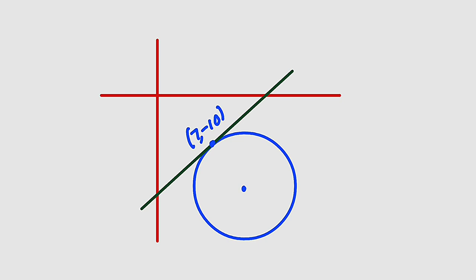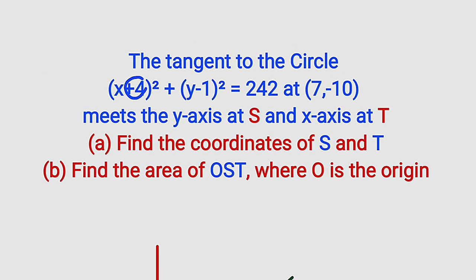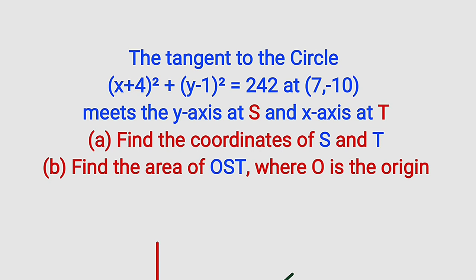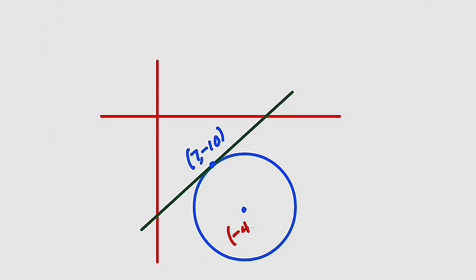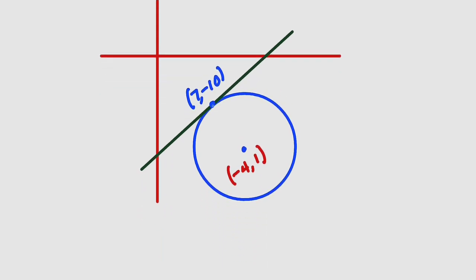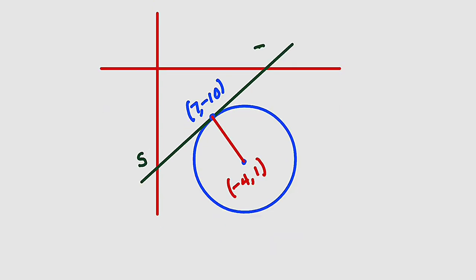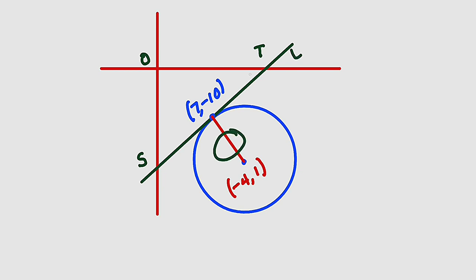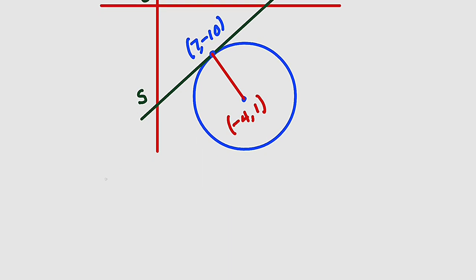The center of this circle will be negative 4 and positive 1. Remember you set the expressions equal to zero and solve for x and y, therefore the center of this circle is at (−4, 1). Now let us draw a radius — this is the radius of this circle. We have point S on the y-axis and point T on the x-axis and the origin O. To find these two coordinates, we first need to find the equation of the tangent line, which I'll call line L. The relationship between the radius and tangent line is that their respective slopes are the negative reciprocal of each other.